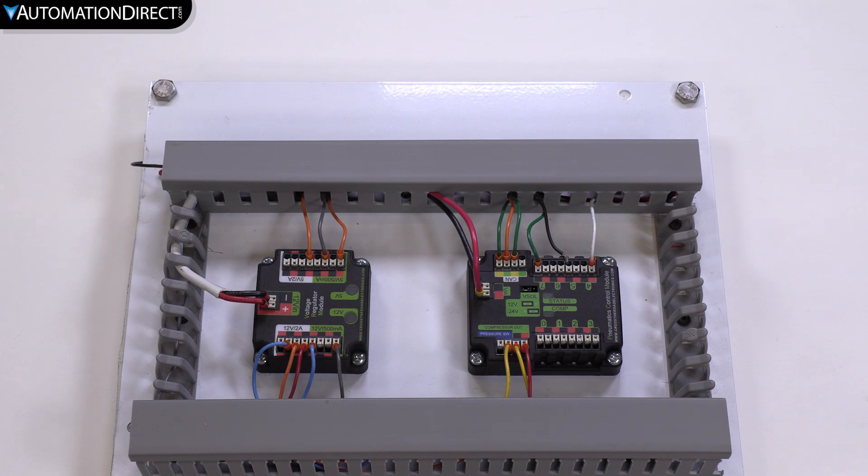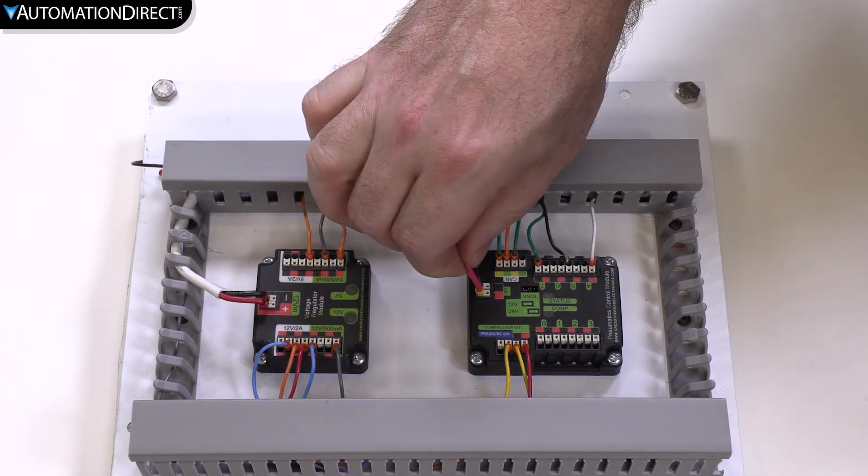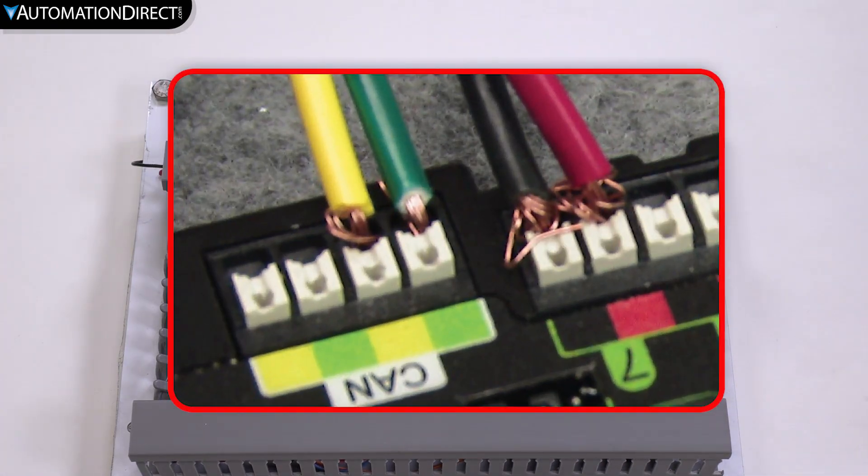If the ferrule is applied correctly there will be no copper showing and this wire can be inserted and removed multiple times without having the wire turn into a mess like this.